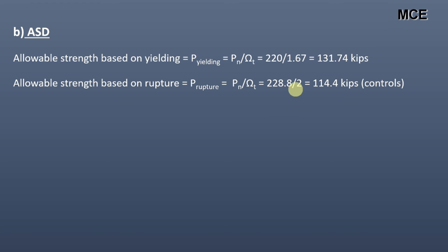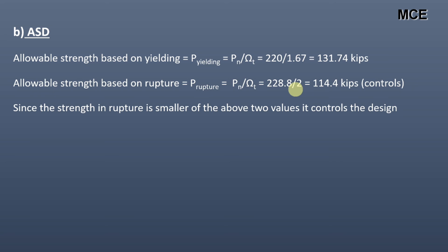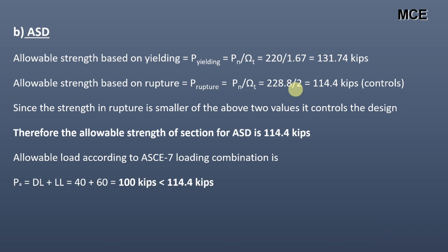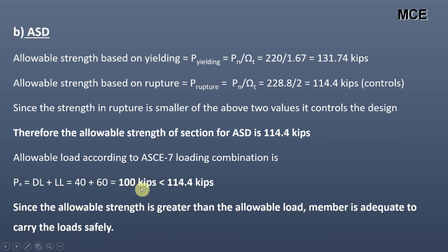Since the strength in rupture is the smaller of the two values, it controls the design. Therefore, the ASD allowable strength of the section is 114.4 kips. The allowable load per ASD load combination equals dead load plus live load, which gives 100 kips. Since the allowable strength of 114.4 kips is greater than the allowable load of 100 kips, the member is adequate to carry the load safely according to ASD.